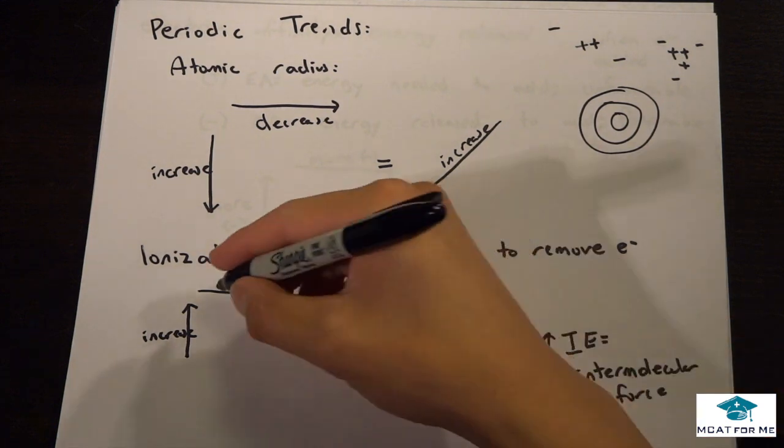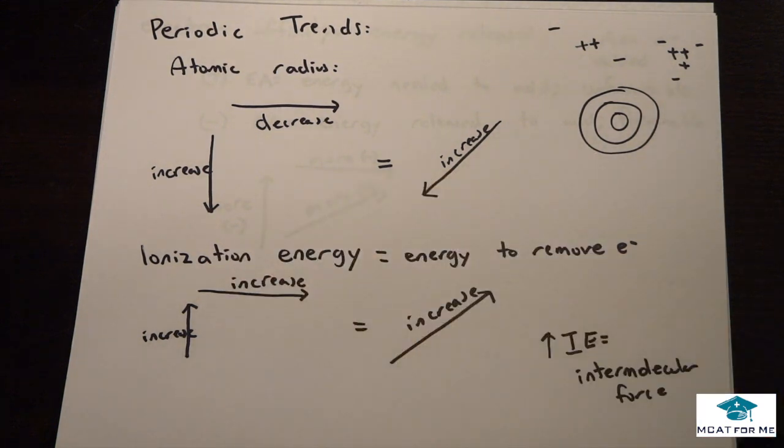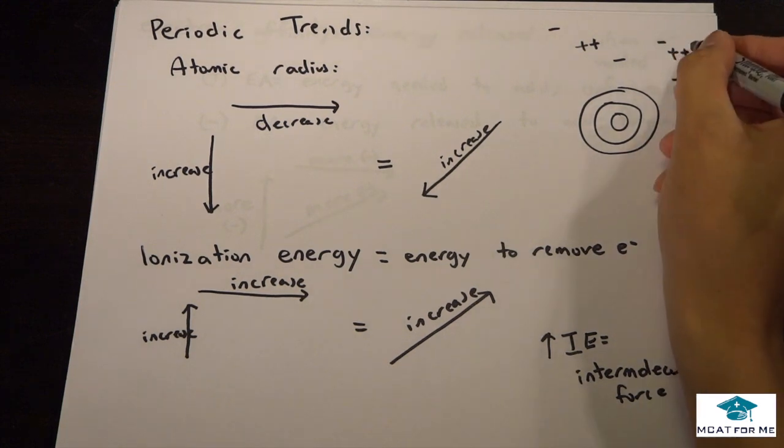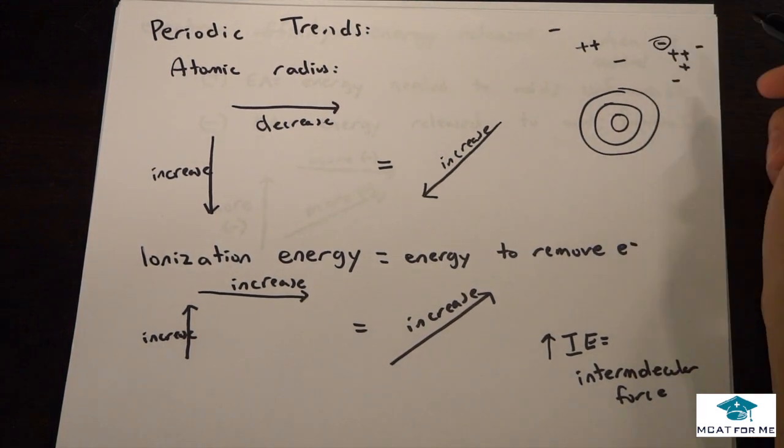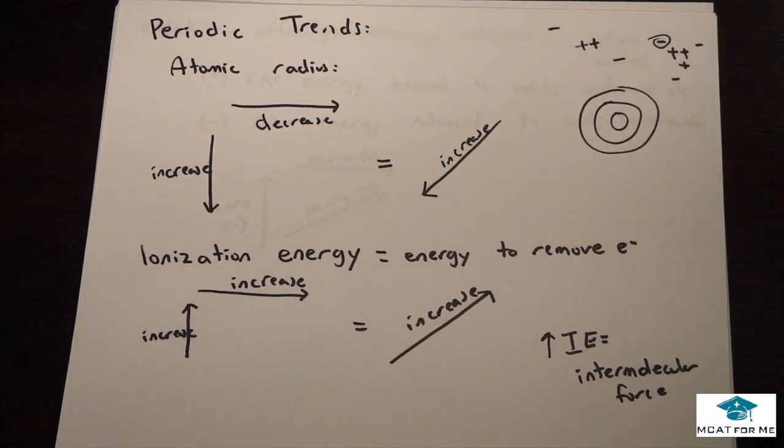And the reason why to go to the right it increases is because the smaller the molecule is, the harder it's going to want to break off an electron. So if you had something like this, the electrons are very tightly pulled in. To remove this electron, it's going to take a lot of work, a lot of energy.